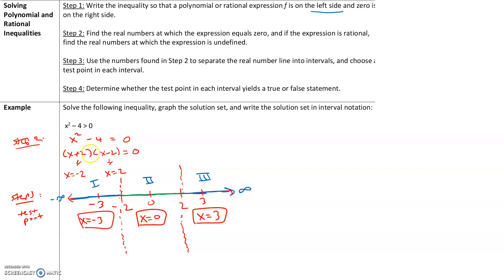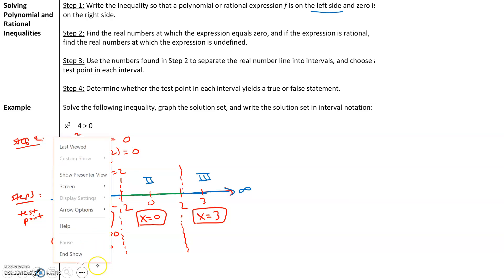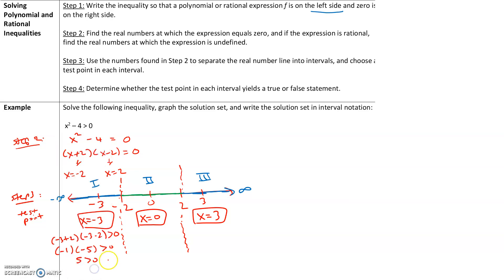Now let's plug these into the factored form of the inequality. For x equals negative 3: (negative 3 + 2)(negative 3 − 2). We want to determine, is that greater than 0? Negative 3 plus 2 is negative 1; negative 3 minus 2 is negative 5. So negative 1 times negative 5 is 5. 5 is greater than 0, so in this interval we get a true statement.